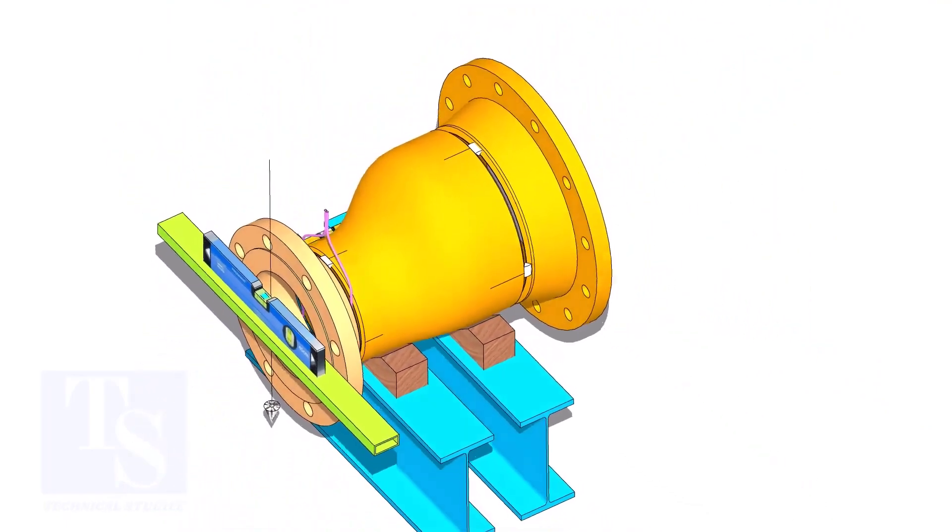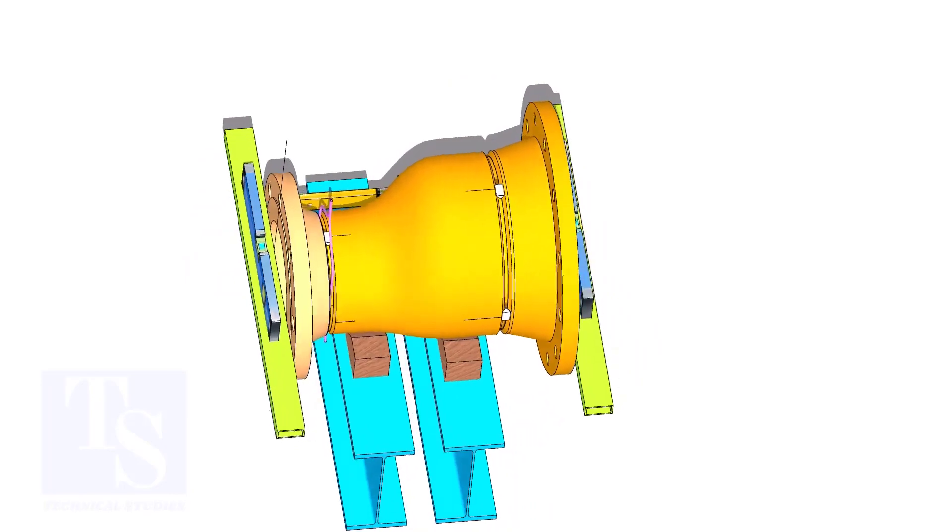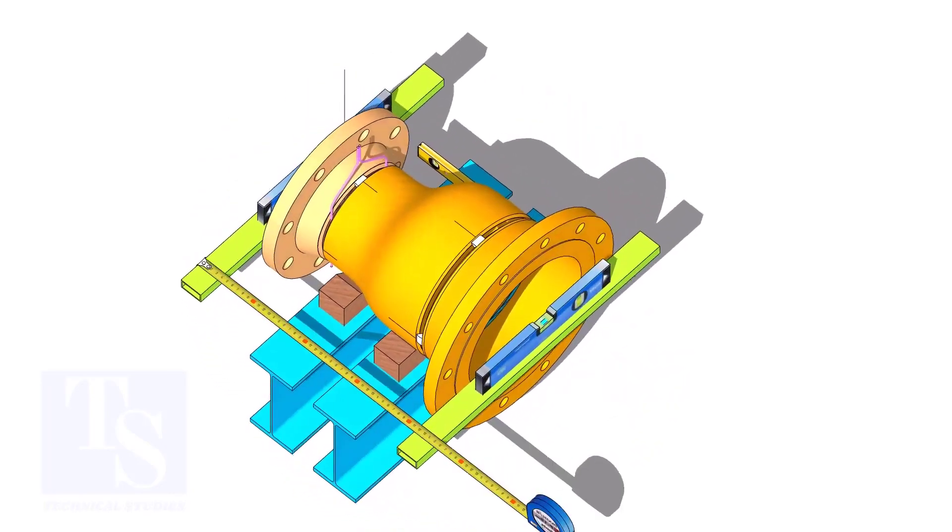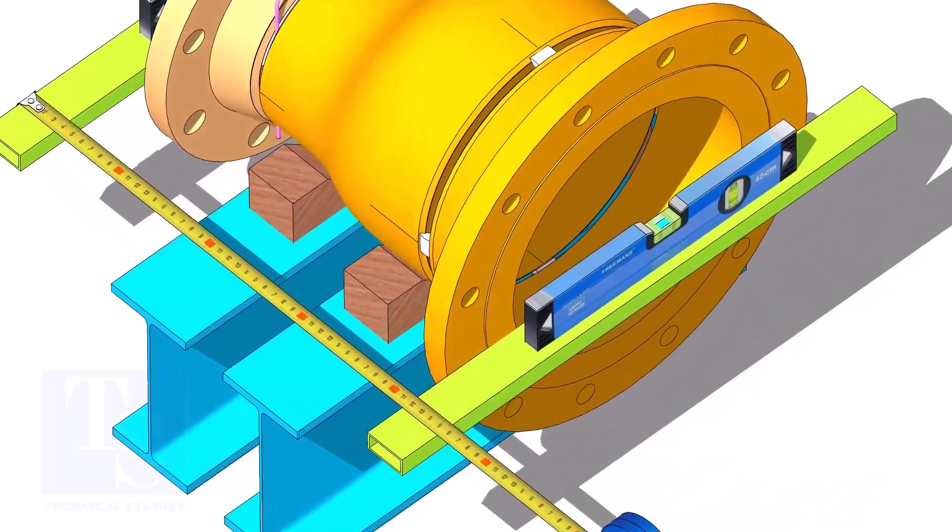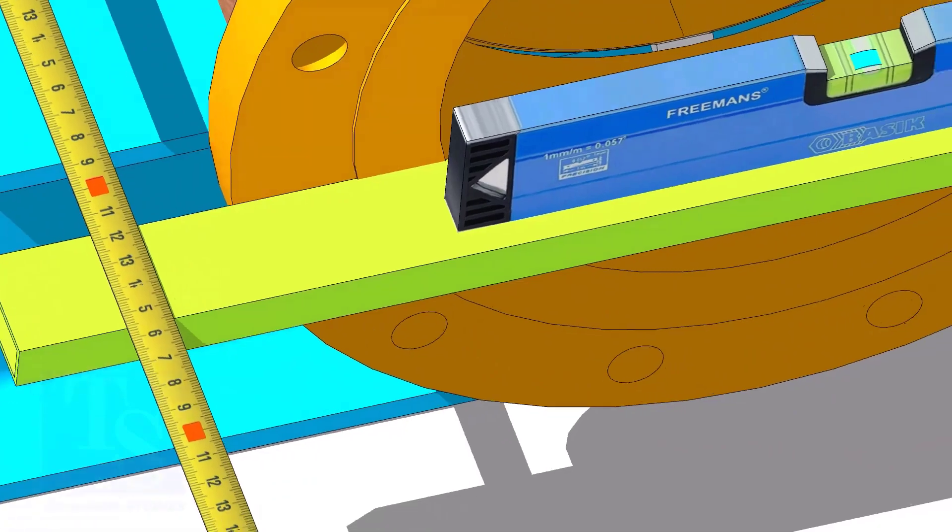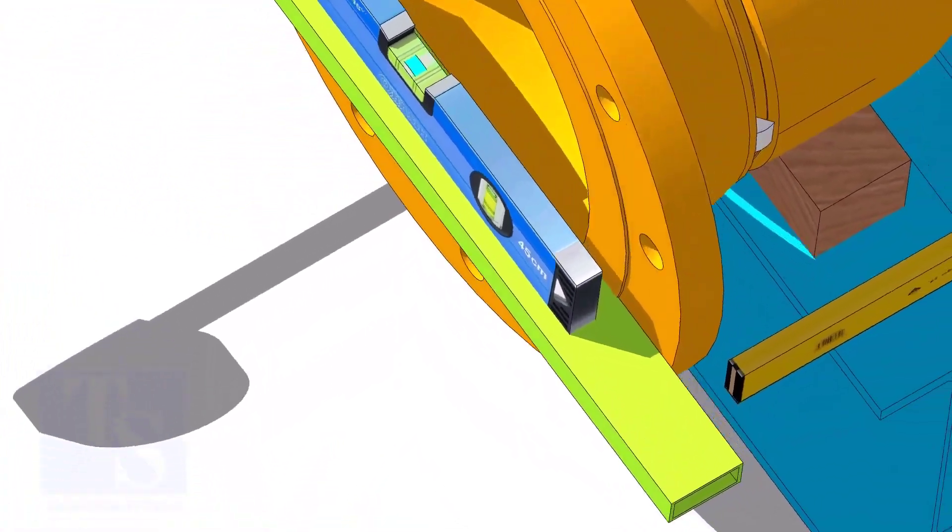Hold an aluminum box or a straightedge horizontally as shown on both ends. The boxes shall be of the same level. Check the length of the spool on both sides. If the dimensions are equal or an acceptable limit, tack weld on both sides.